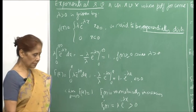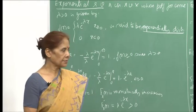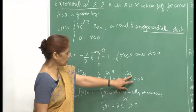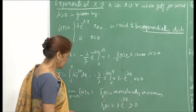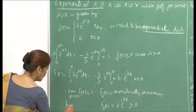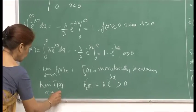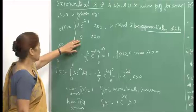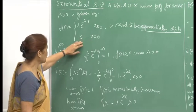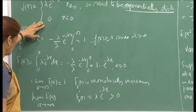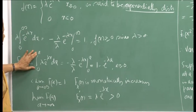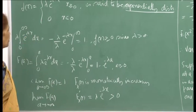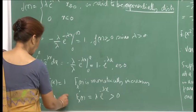We verify the conditions the CDF must satisfy. The limit of F(a) as a goes to plus infinity is 1, since e raised to minus lambda a goes to 0. As a goes to minus infinity, for x less than 0 there is no mass, so that integral is 0. Therefore the limit of F(a) as a goes to minus infinity is 0.